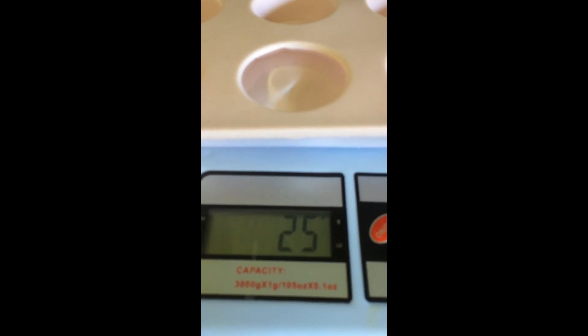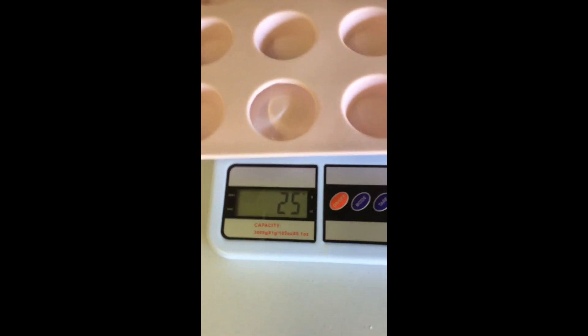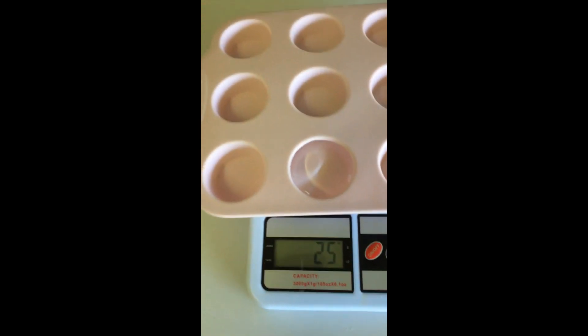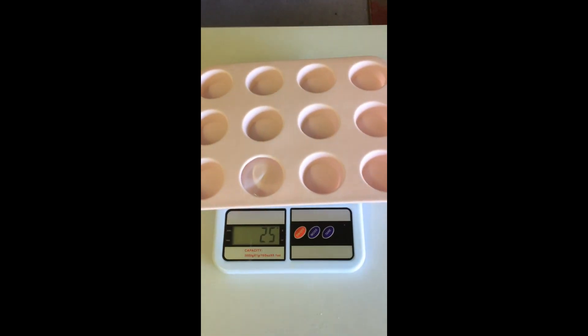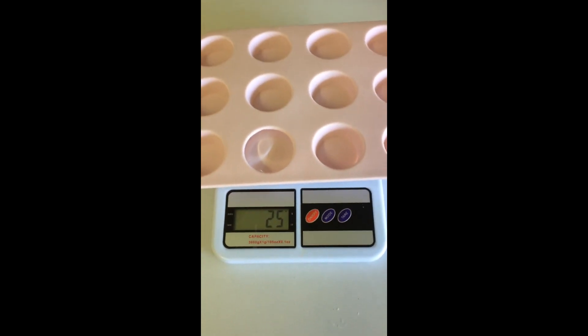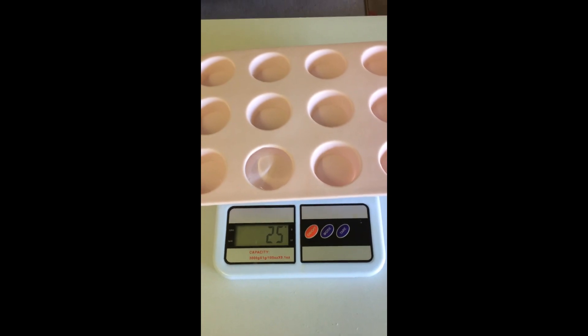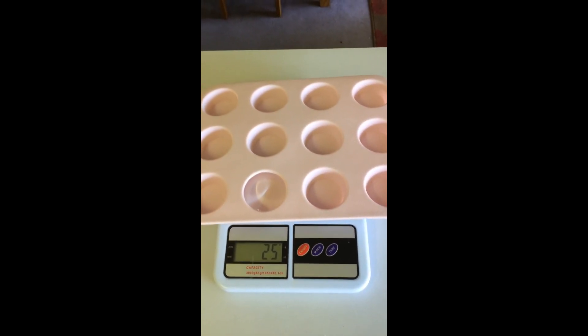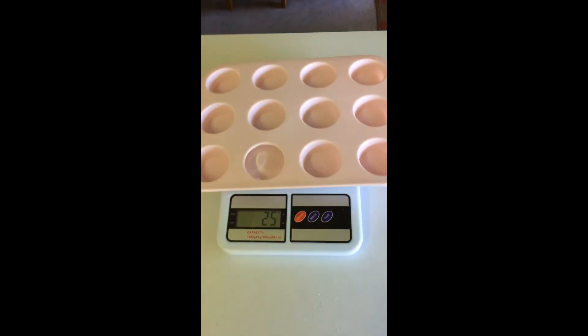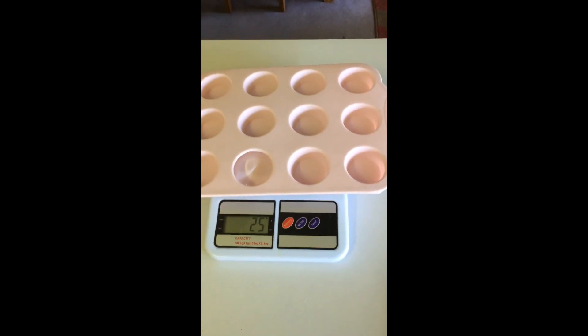So one cavity is 25 grams. Now, all you do is, because there's 12 cavities on my mold, you'll just go and 25 times 12 and that will give you the exact volume that your mold can hold.